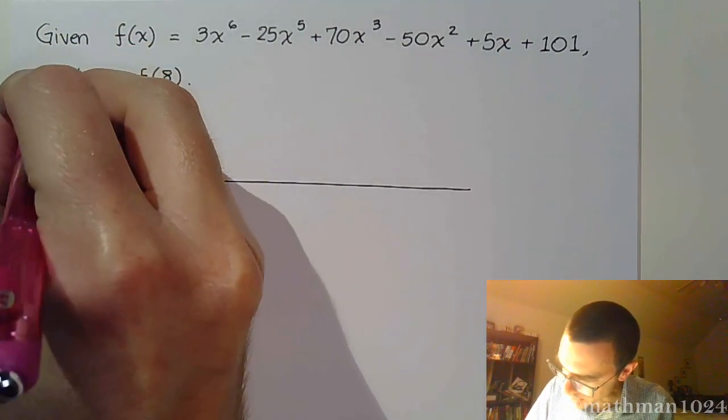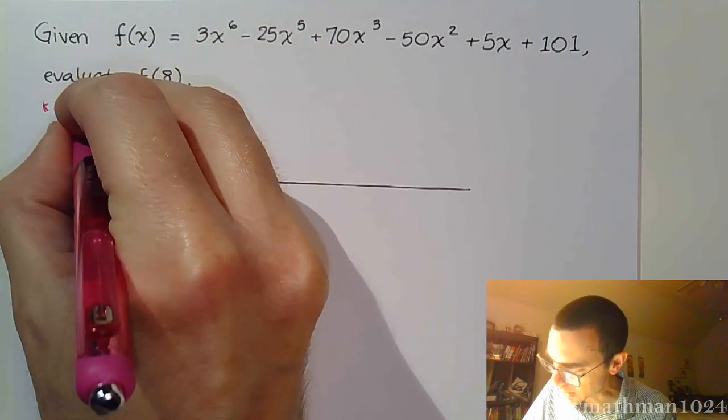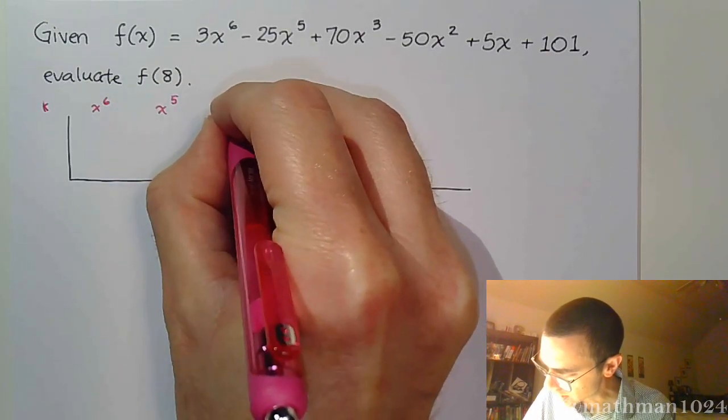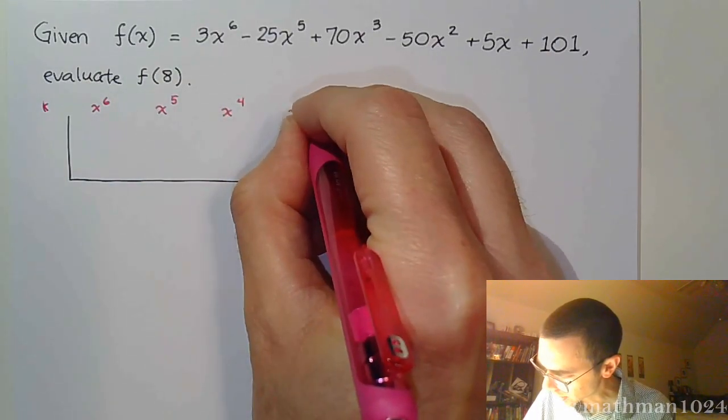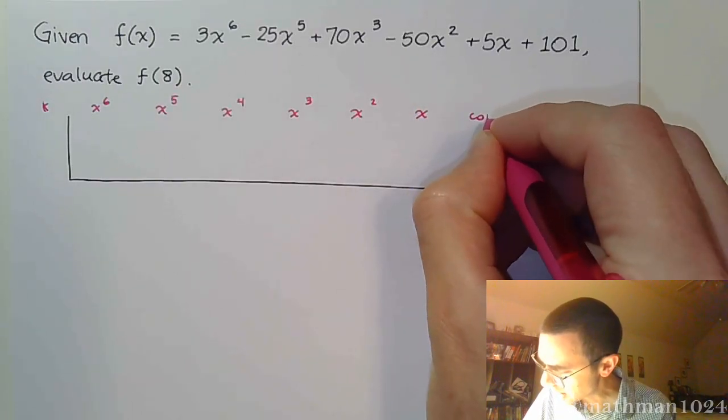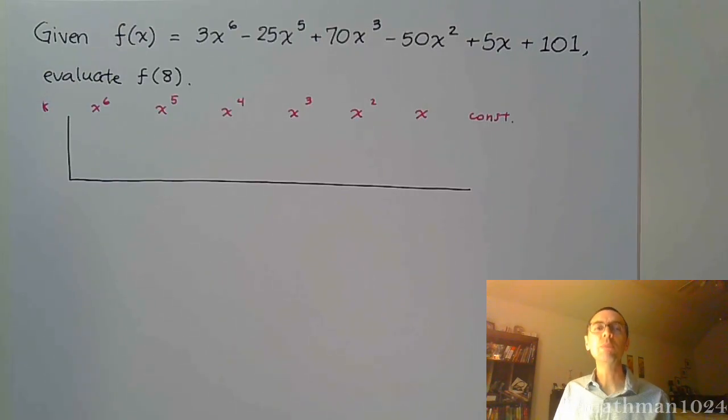So, we put our headings here like we've been doing. There's k. This goes all the way up to x^6, so x^6. Count down 5, 4, 3, 2, 1, and your constant goes at the end. Remember, we can't skip any terms. There's no skipping allowed.